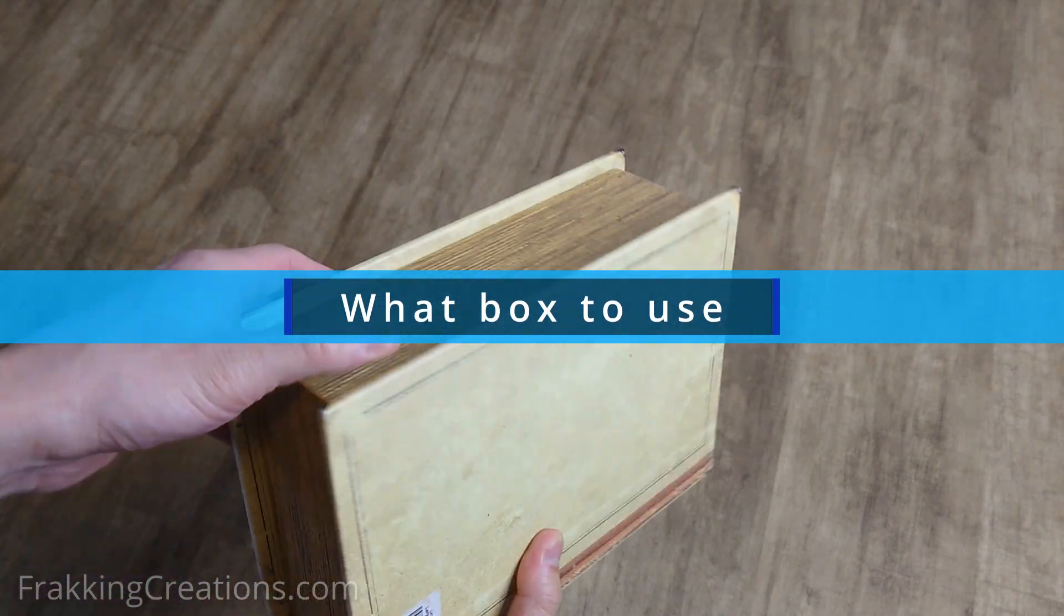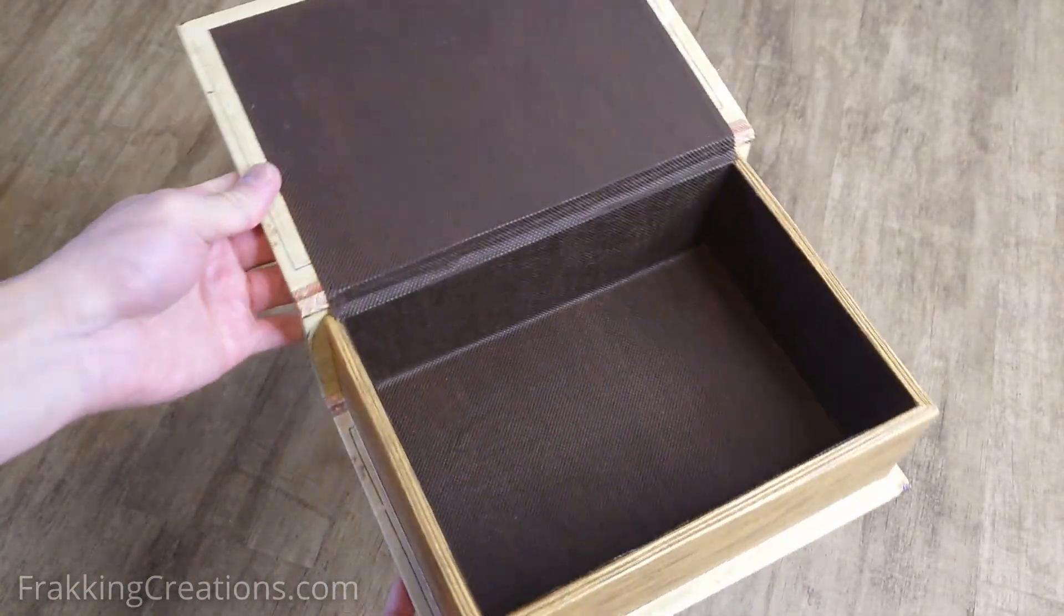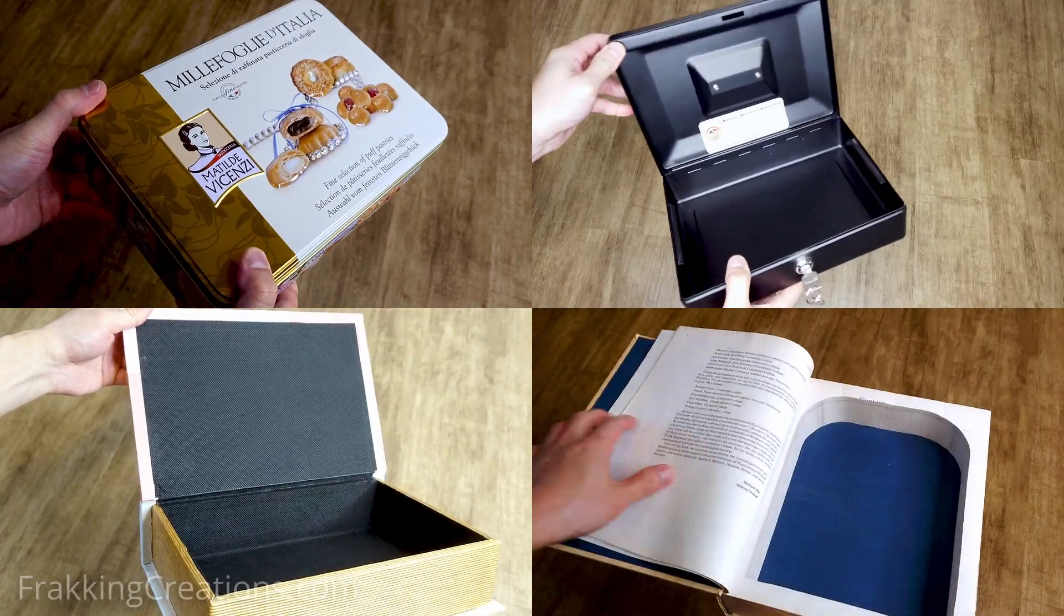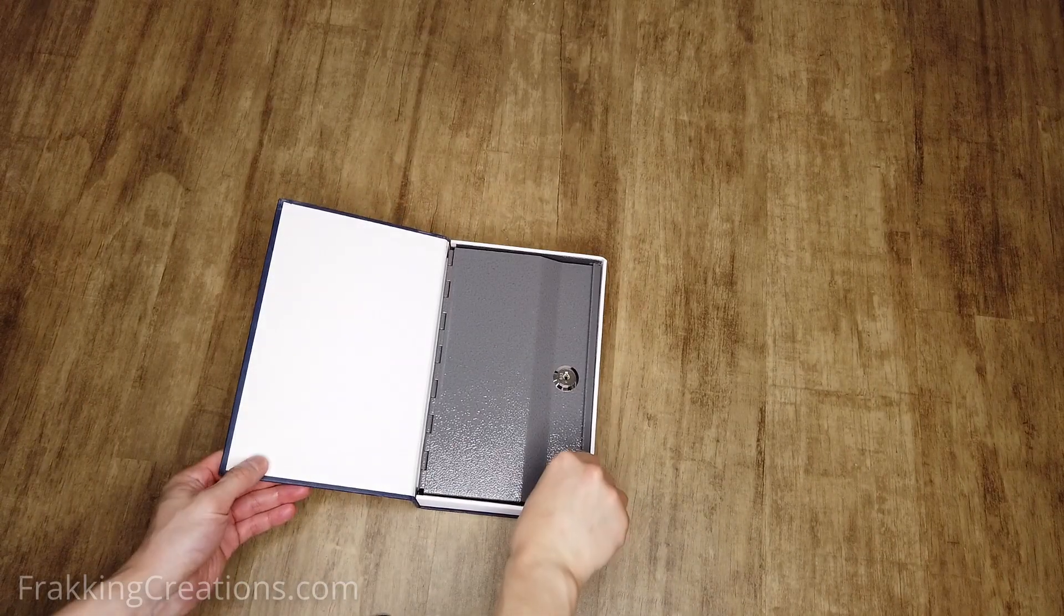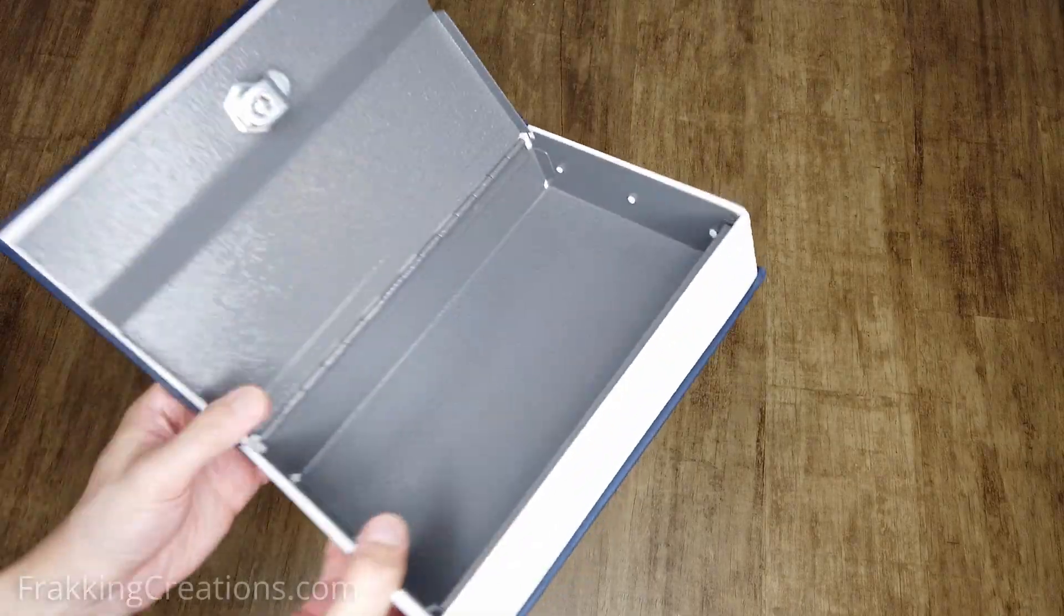What box to use? I'm going to use this cool box I have for this project. You can use any box or container of your liking from metal boxes, cash boxes, to different types of book boxes and book safes of your liking. That's what's great about this project. You can use your favorite box and make it into a Faraday cage to protect your key fob and vehicle.